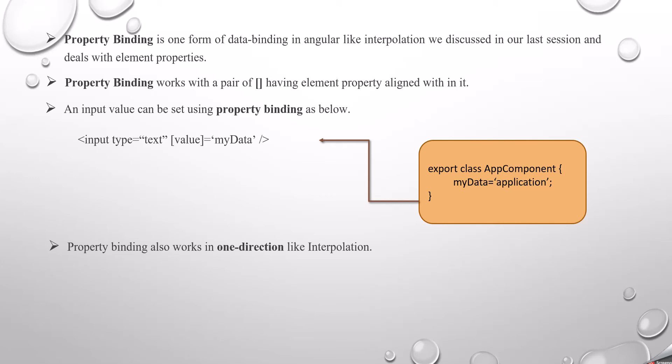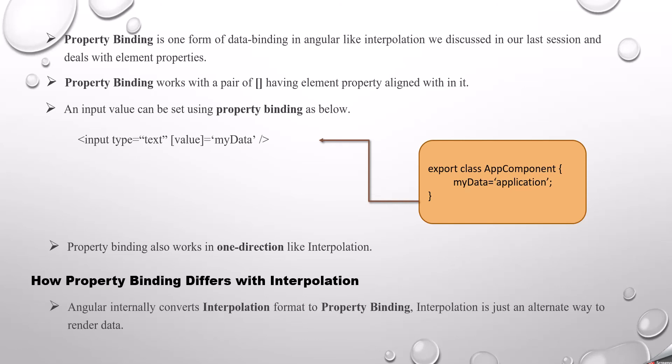Property binding also works in one direction, like interpolation. One important topic from this session is how property binding differs from interpolation. Angular internally converts interpolation format to property binding. Interpolation is just an alternative syntax to render data — no browser understands the double-curly-brace syntax. What the browser understands is the property, what's being rendered, and the value it contains. So interpolation is simply a format that gets converted to property binding internally.